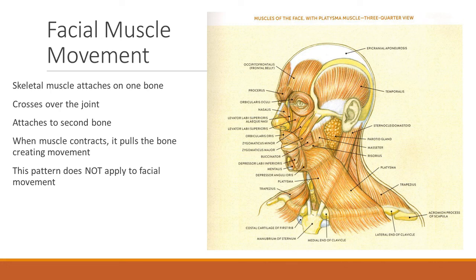Facial muscle movement. The skeletal muscle in our face usually attaches on one bone, and normally skeletal muscle will cross over a joint and then attach to a second bone. Think about your elbow — your bicep attaches on one bone, crosses over your elbow joint, and when it contracts it lifts your arm. But in our face, this same thing does not apply to facial movement.